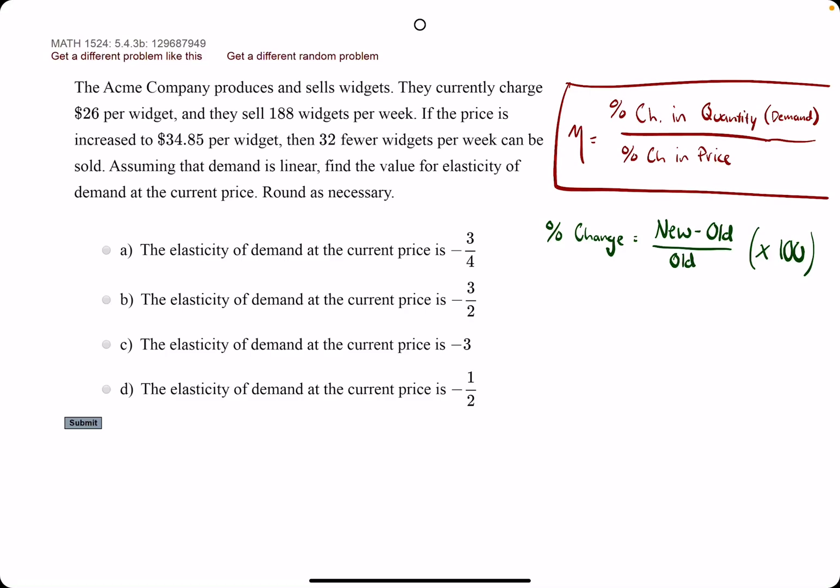Okie dokie. In this problem, they give us some information about the price of widgets and how many they sell, a quantity, and then the increased price, and then how many fewer widgets they sell.